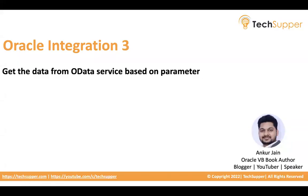Hi everyone, welcome back. In this video I am going to show how to use the GET operation of the OData adapter. For example, you have an OData service and from that data service you would like to get a specific record based on the ID. For example, we have a Customer entity and from that entity you would like to get data of a particular customer based on its ID. Let's see how to perform that GET operation with the help of the OData adapter.